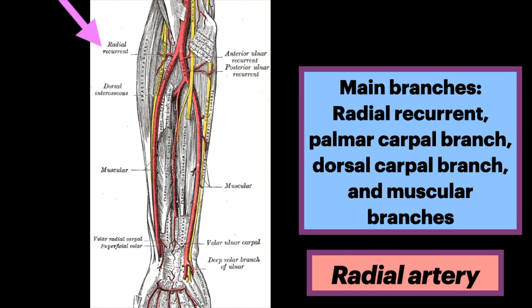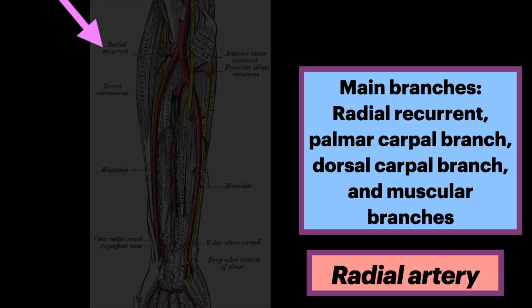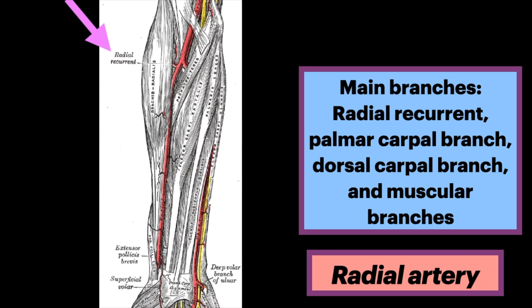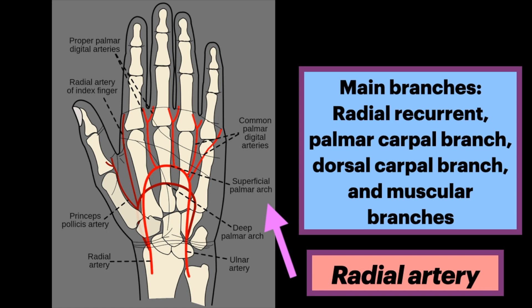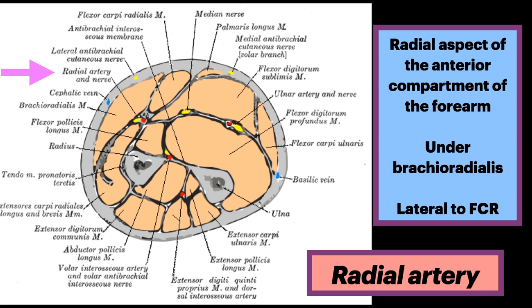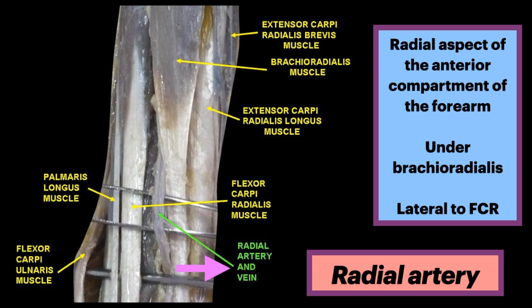It supplies the radial recurrent artery as well as palmar and dorsal carpal branches, and smaller other muscular branches. The radial artery runs along the radial aspect of the anterior compartment of the forearm, under the brachioradialis and lateral to the flexor carpi radialis tendon.